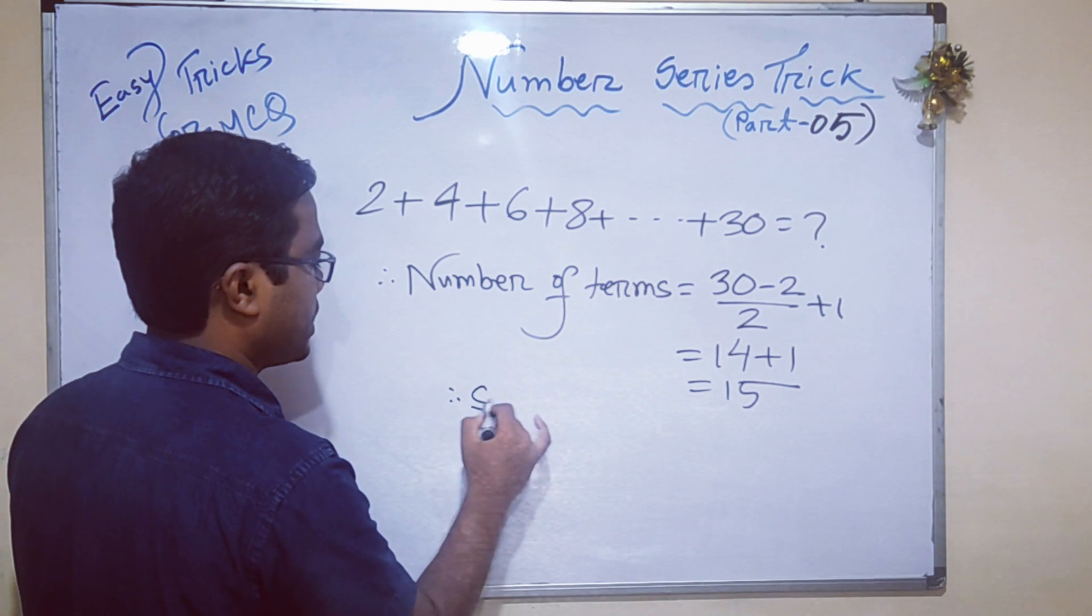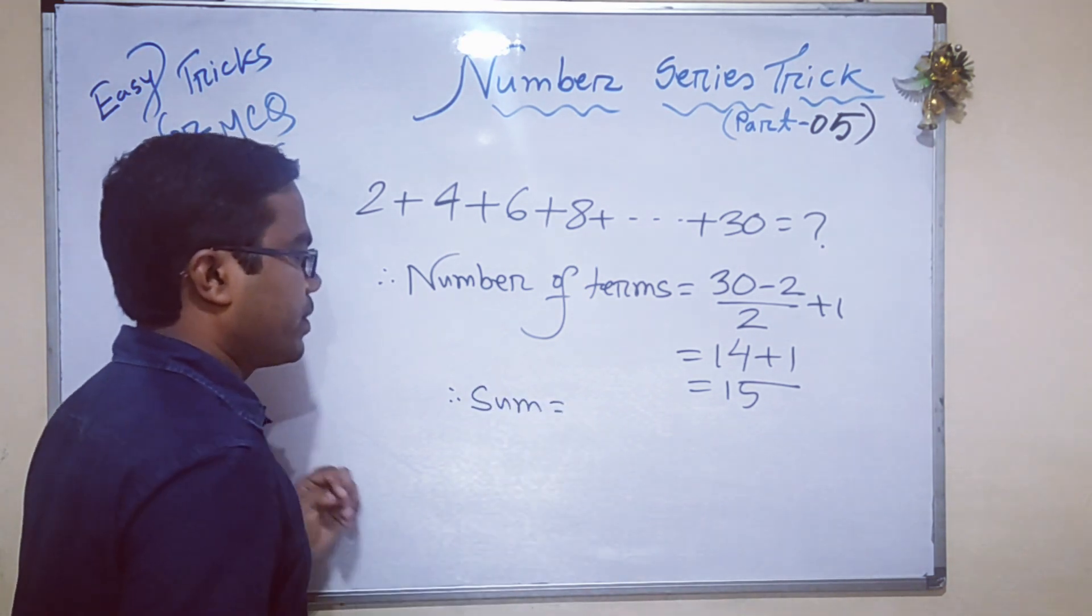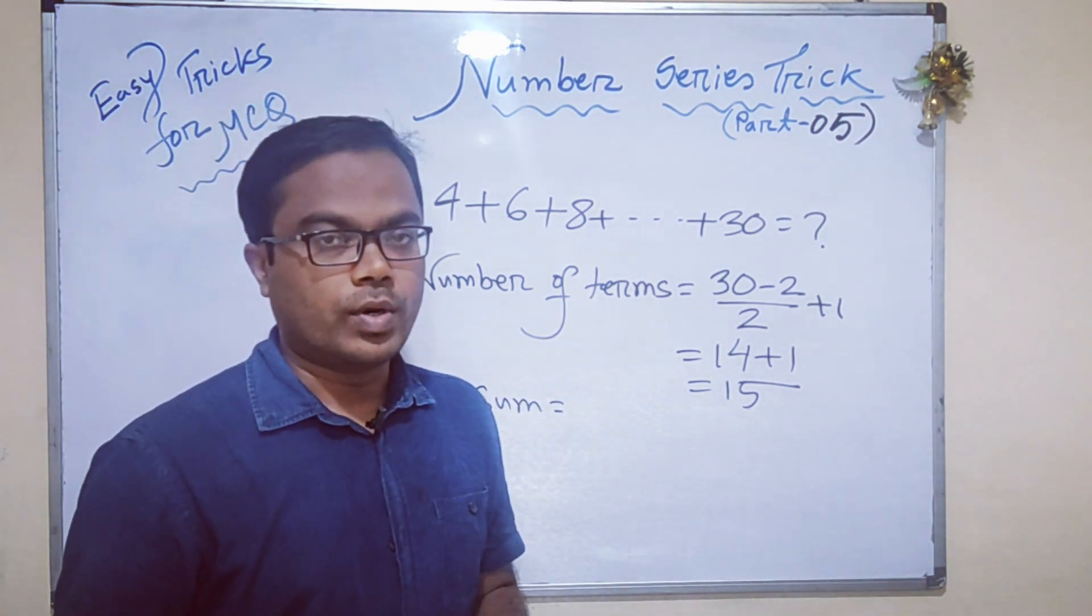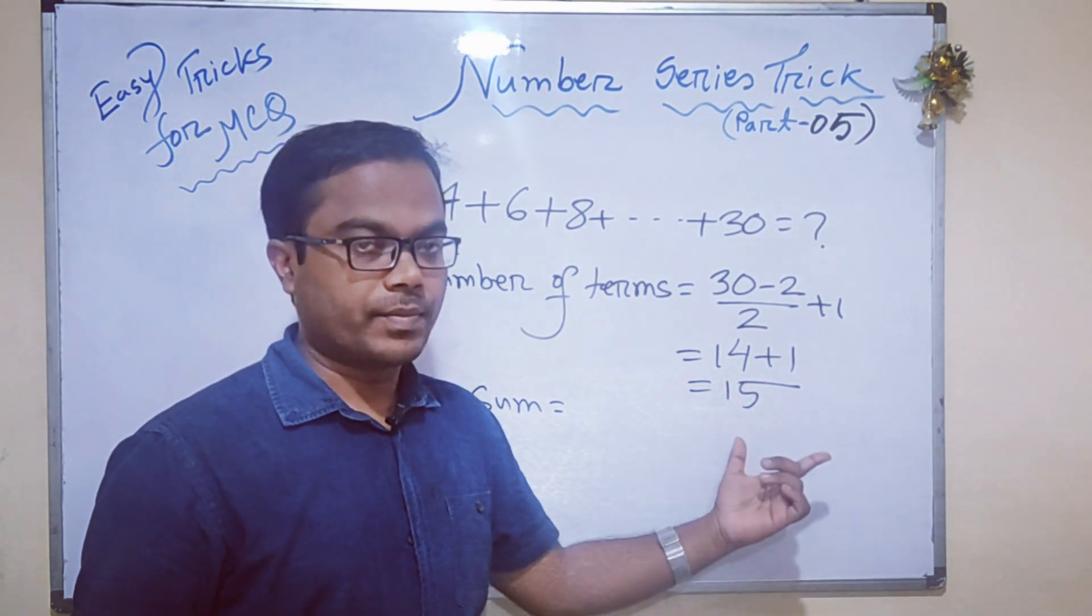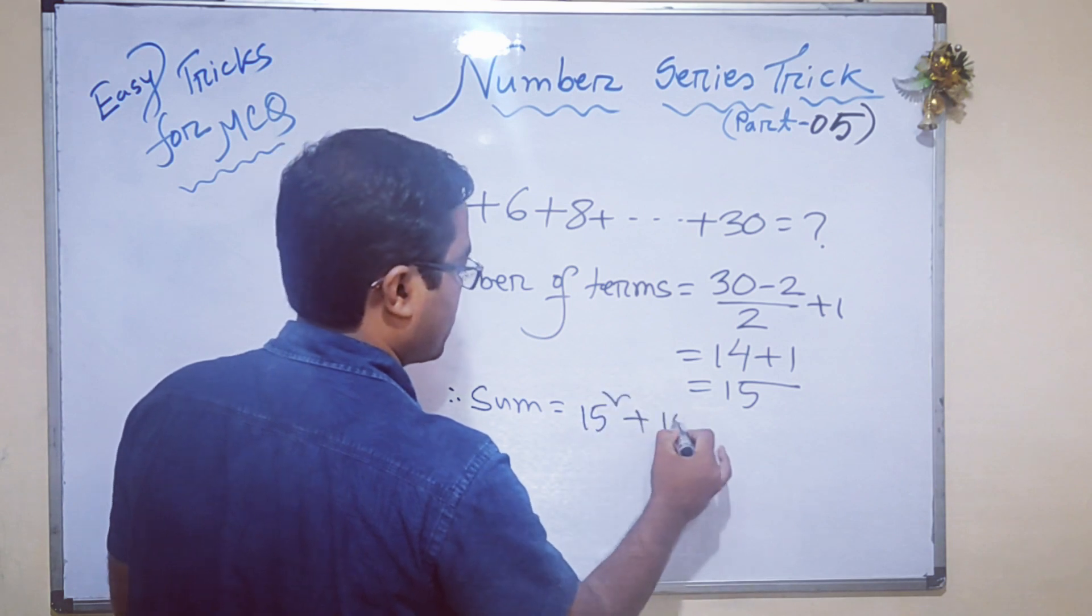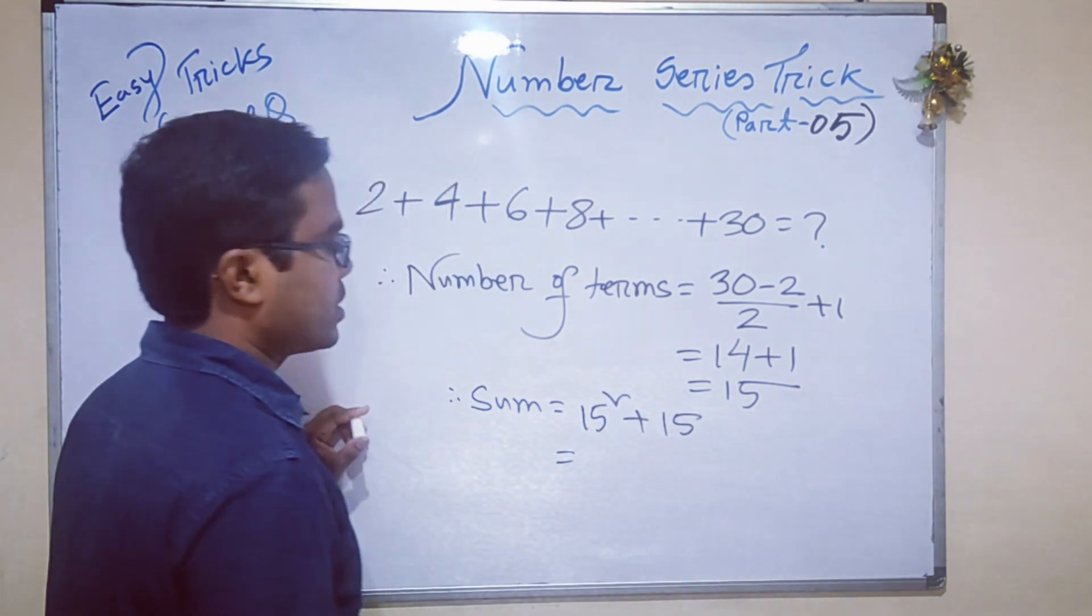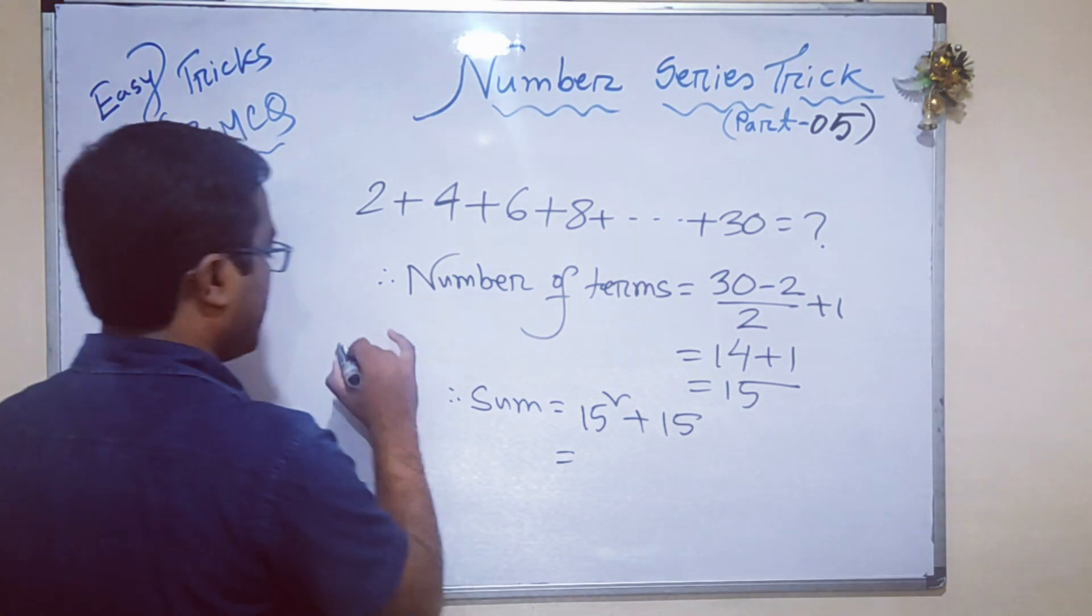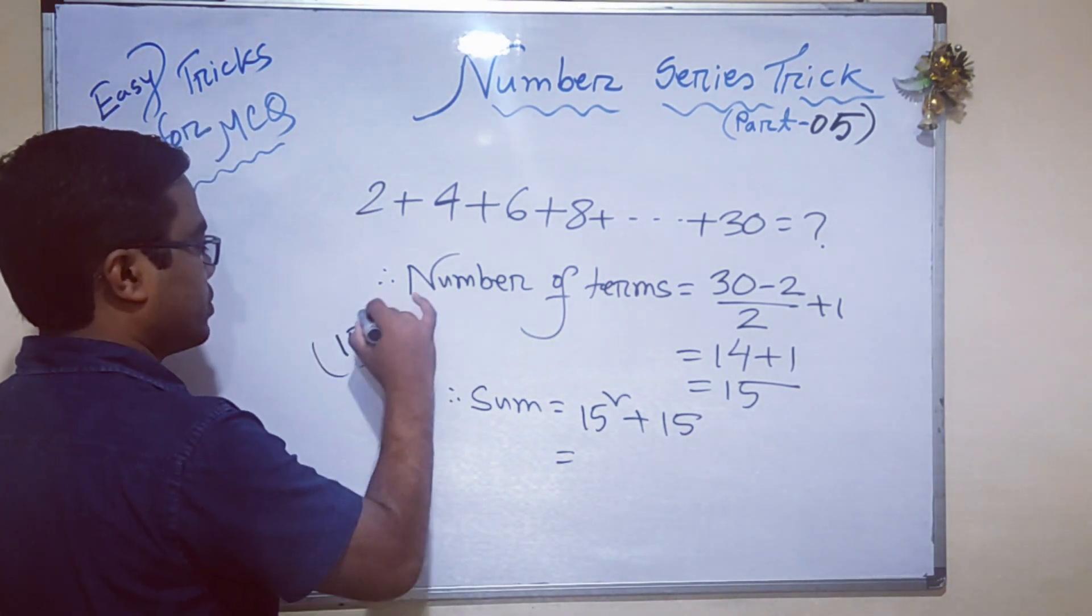Therefore, sum equals - the formula is n² + n, where n is number of terms. Number of terms squared plus number of terms. So we can write 15² + 15. 15² means 225, easily you can find out the square of 15.